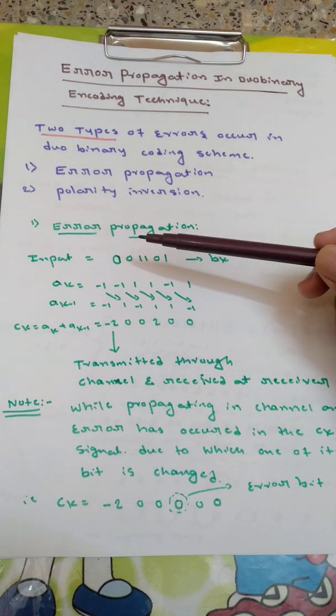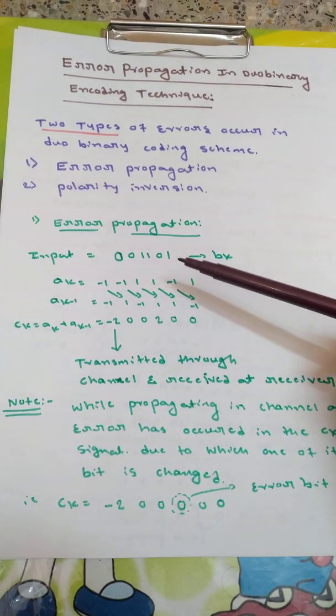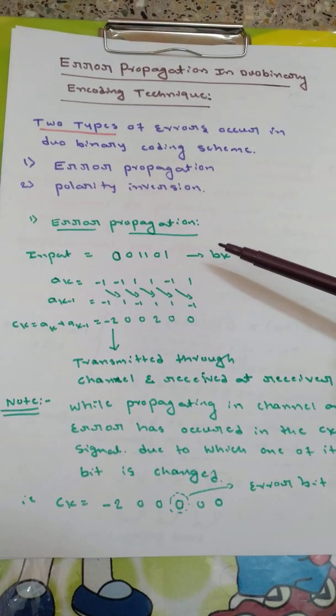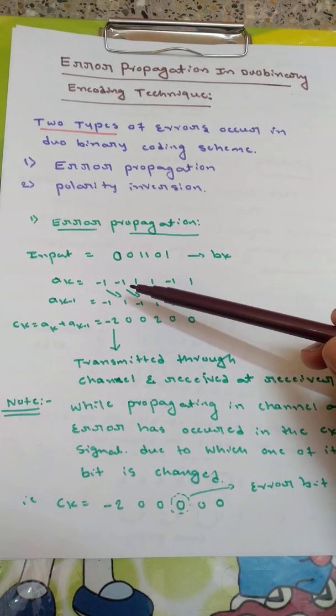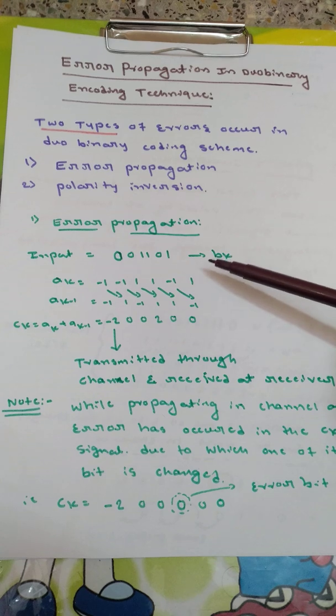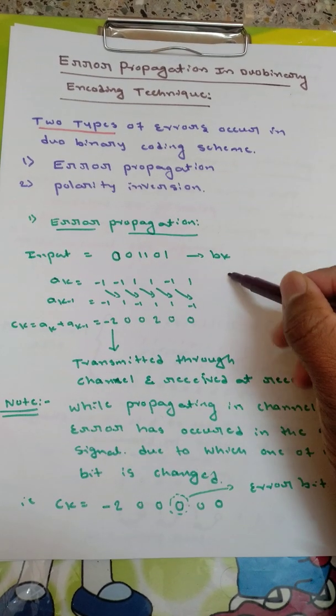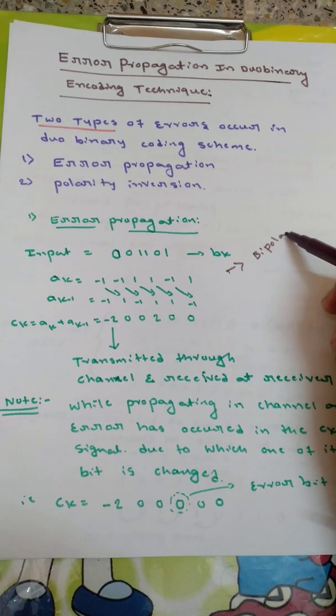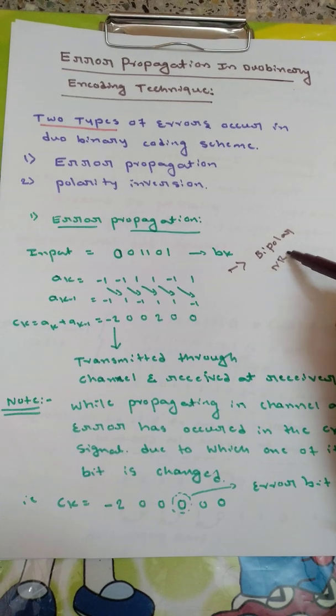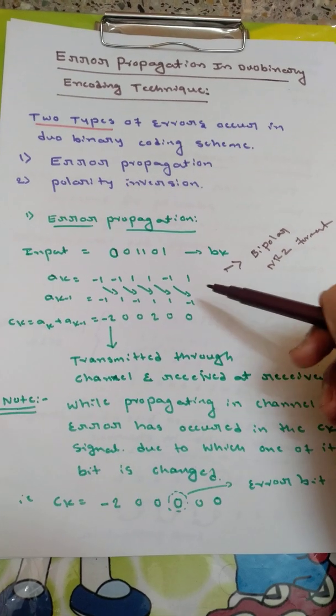The input which I have taken in this video is 001101. This is the input sequence which I have named as BK. And this is AK equal to non-returning to zero format of that one, bipolar non-returning to zero format. This is bipolar NRZ format.